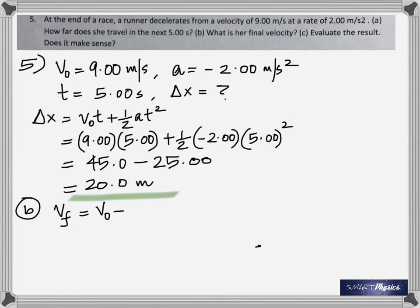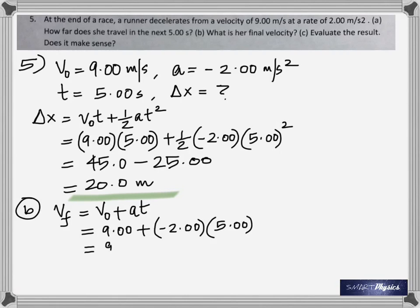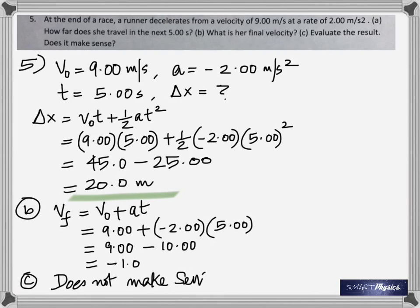In part b, find her final velocity. Using the equation, you get 9 minus 10 which is negative 1 m/s. Part c asks you to evaluate whether this result makes sense — it does not, because a negative velocity would mean she started running in the opposite direction, which doesn't normally happen in a race.